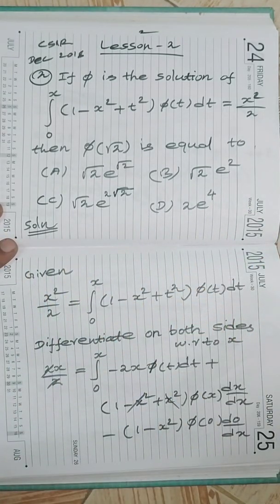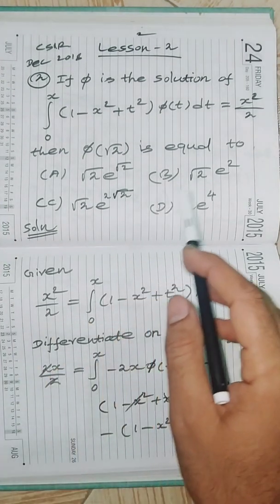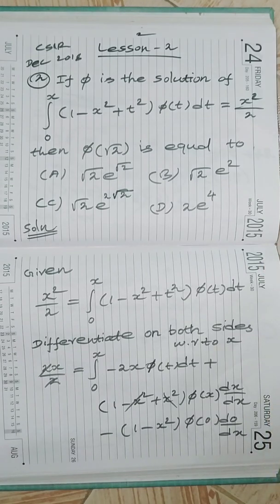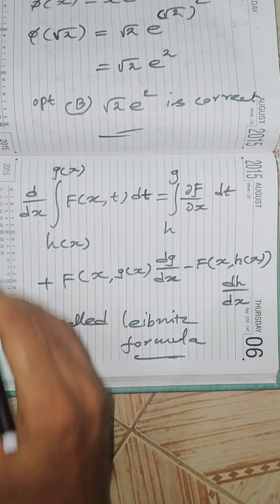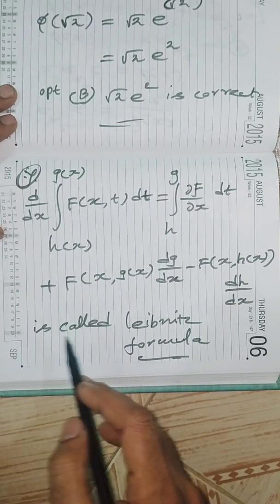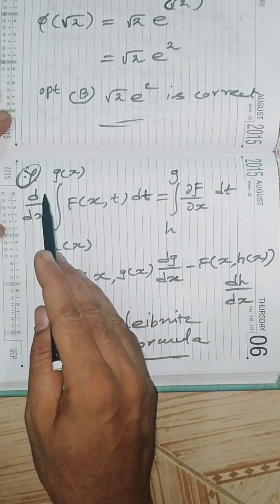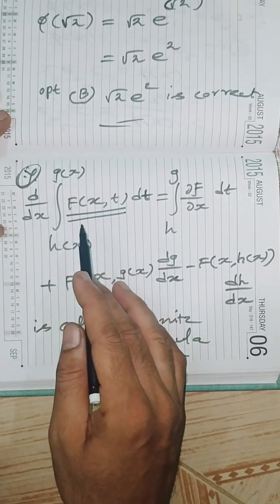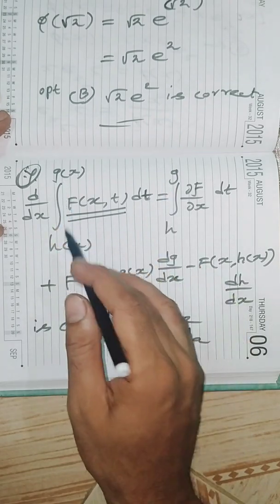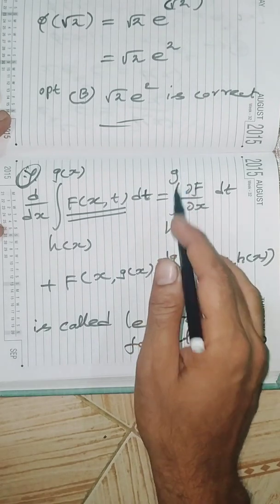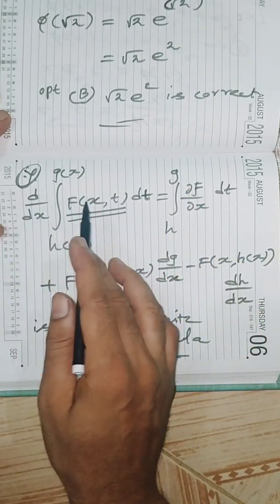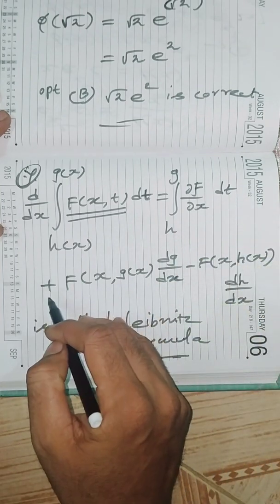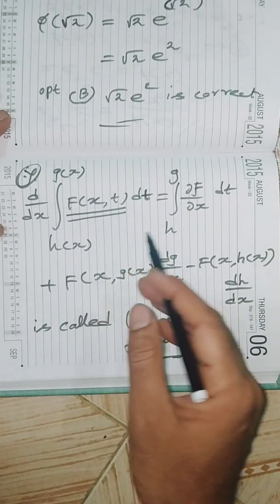Before solving, please note a very important formula — the Leibniz formula for differentiation under the integral sign. In general, if we have a function f(x, t) with limits g(x) and h(x), and we differentiate with respect to x, it becomes the integral of ∂f/∂x with respect to t, plus boundary terms.